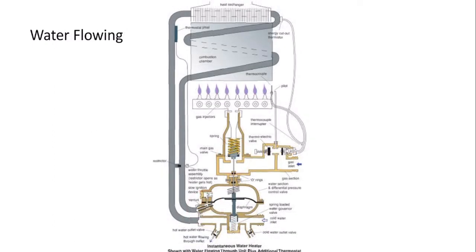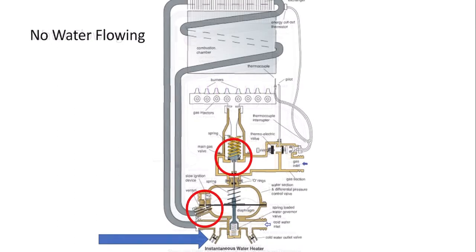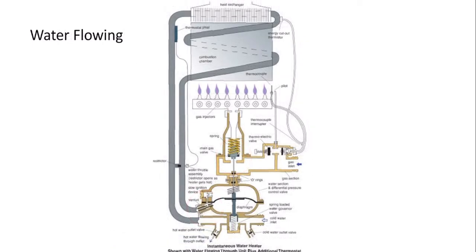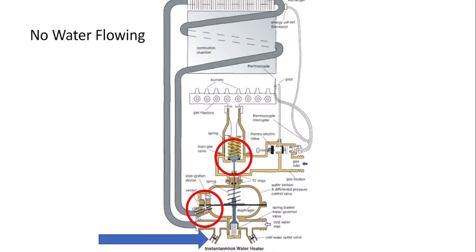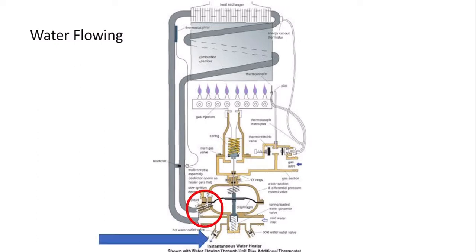When you move water through it, the Venturi and the slow ignition device come into play. The diaphragm moves up. So, there's water been opened. Venturi is coming into play. The diaphragm has moved up and pushed the gas valve open. So, if you look at the diaphragm, you can see it's down, up, flat, up. And if you look above it at the gas valve, the gas valve has now been opened. And that allows gas to go up to the burner and light the burner.